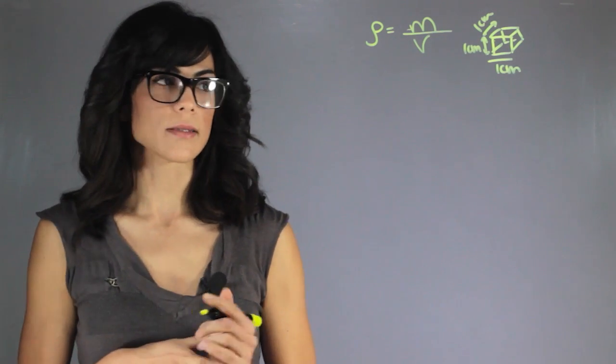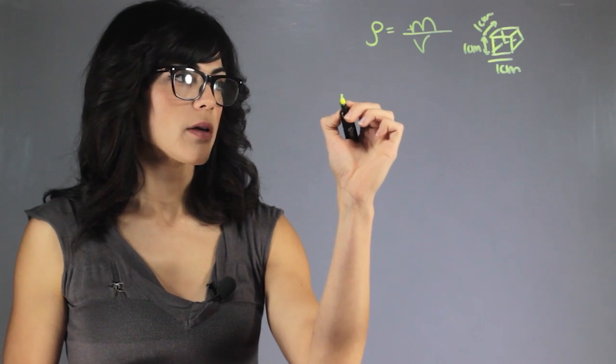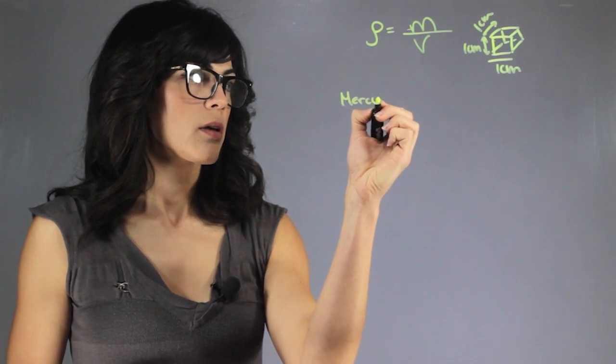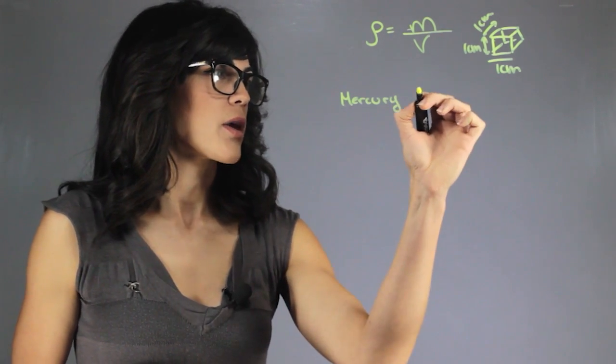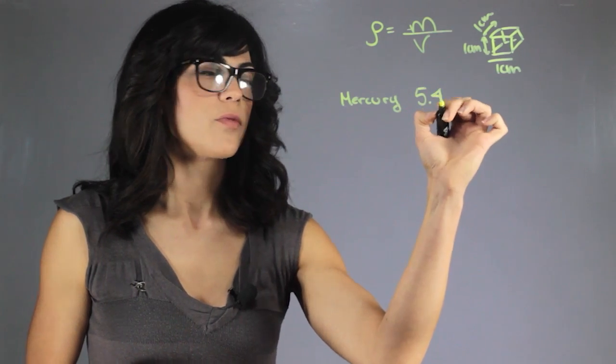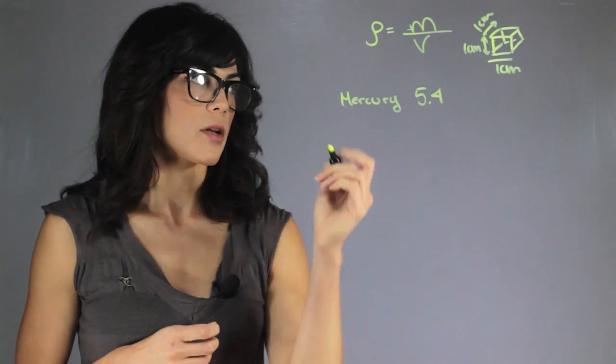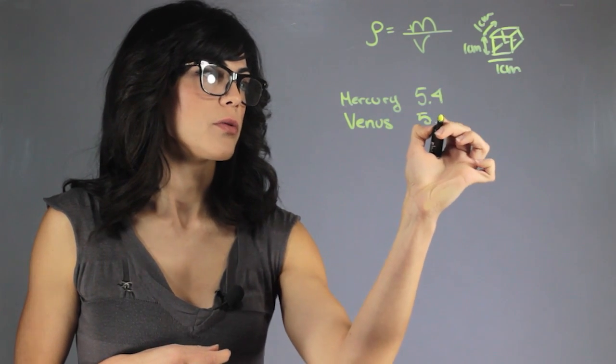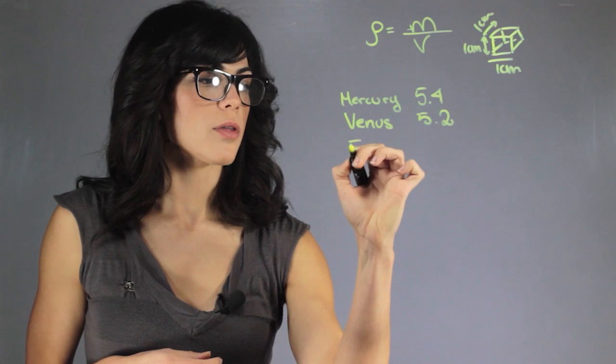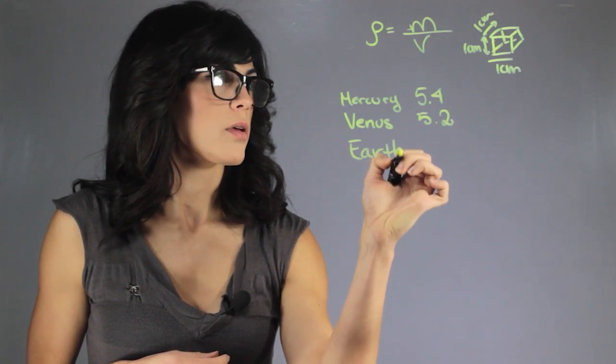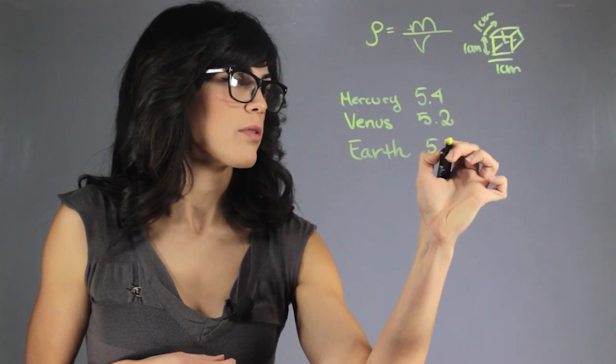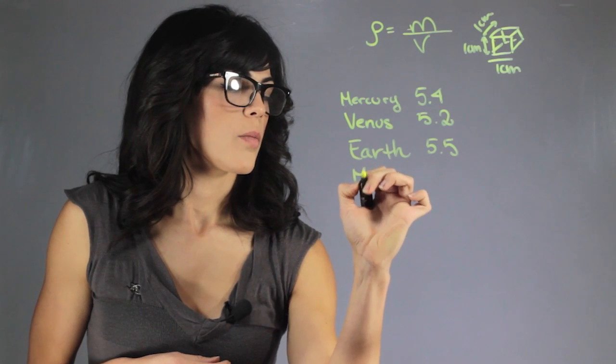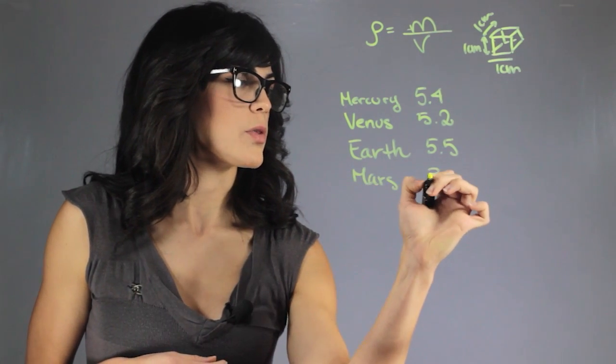So let's look at the inner planets. For Mercury, we can find 5.4 grams per cubic centimeter. Venus is 5.2. Earth is 5.5. Mars is 3.9.